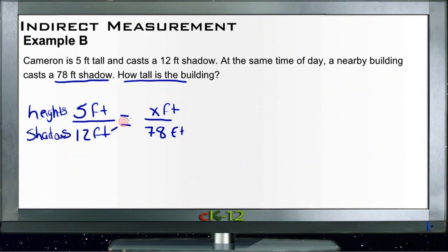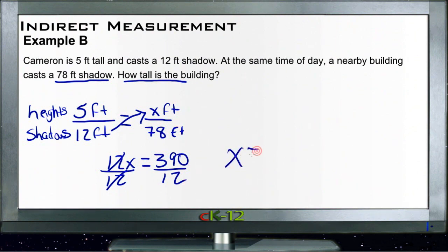Now we can cross-multiply. 12 times x would be 12x, and 5 times 78 is 390. So 12x equals 390. Then we just divide both sides by 12. 390 divided by 12 would be 32.5. So x equals 32.5 feet, which would be the height of the building.